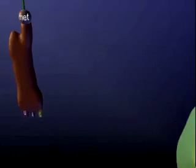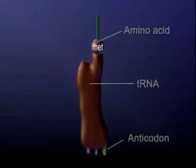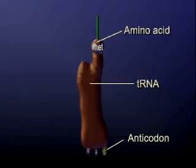Transfer RNA carries an amino acid, which will be incorporated into the polypeptide. Its anticodon is a triplet complementary to the codon on messenger RNA that specifies that particular amino acid.